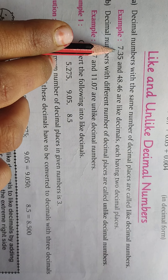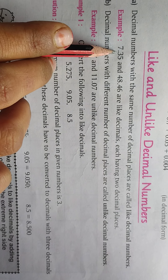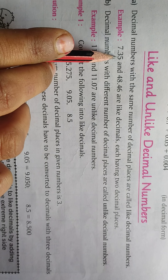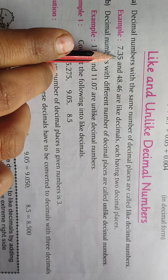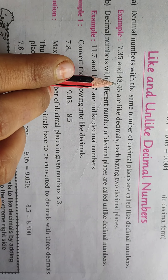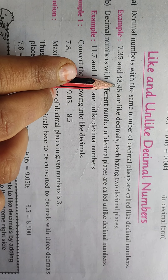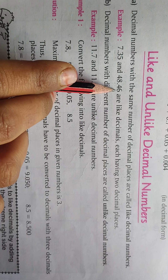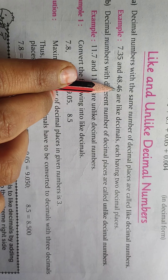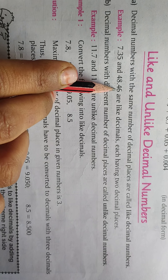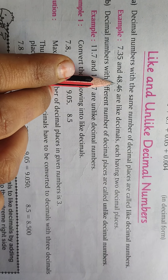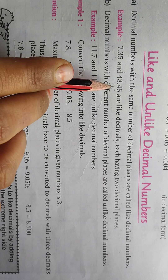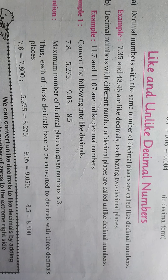After the point, we have the tenths place and the hundredths place — two decimal places. Here also, two decimal places are given. That is why both decimal numbers are like decimals.